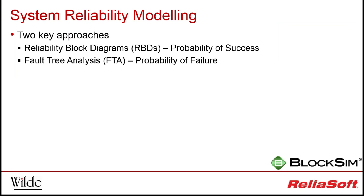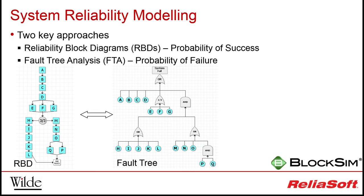Following on from the qualitative assessment performed in the FMEA, it's desirable to get a quantitative figure on the expected reliability of a system. The reliability of a system will depend on the reliability of its underlying subsystems and components and how these are connected together. There are two primary methods to model this: reliability block diagrams (RBDs) and fault trees. Although very similar and often interchangeable, they differ slightly in perspective — reliability block diagrams consider the success domain, where the overall probability of the system completing its mission is based on the likelihood that all parts work as required, whereas fault trees consider the failure domain, looking at the probability of things failing.